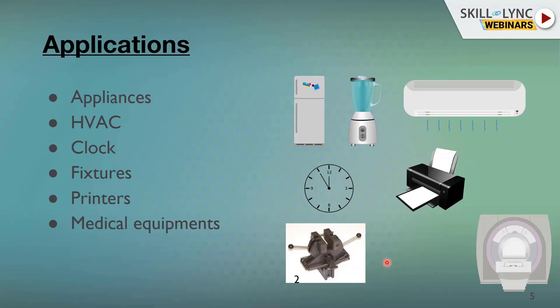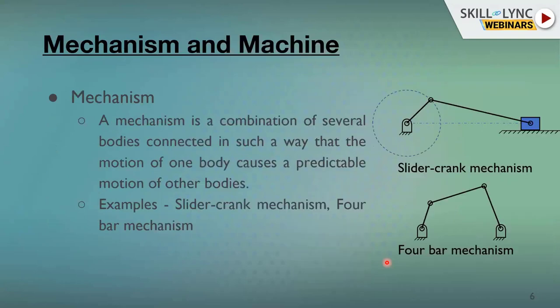The difference between a machine and a mechanism is in terms of the desired output. If the desired output is power or work, that is a machine; if the desired output is motion, we call it a mechanism. These two terms are interchangeably used in Theory of Machines. These machines influence our lives, which is why it is important to study them, and Theory of Machines has very important value in studying mechanical engineering.